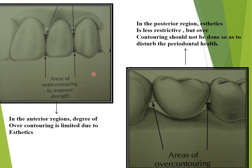Regarding over-contouring: in the anterior region, the degree of over-contouring is limited due to aesthetics, so we will not really be able to over-contour anything. In the posterior region, aesthetics is a little less restrictive, but over-contouring should not be done as it would disturb the periodontium. Anywhere, over-contouring is wrong.